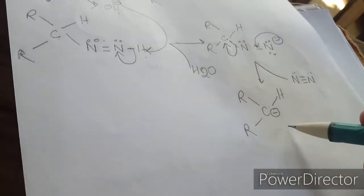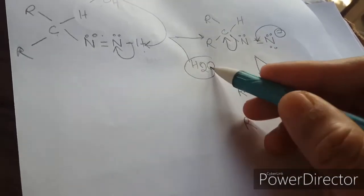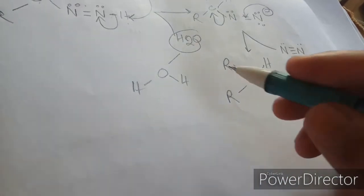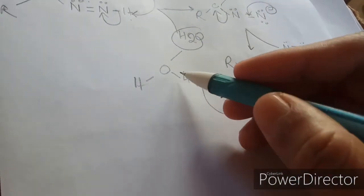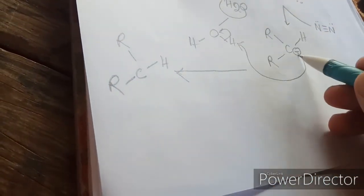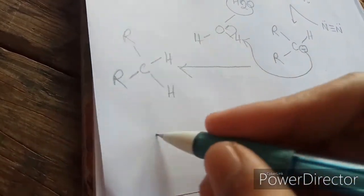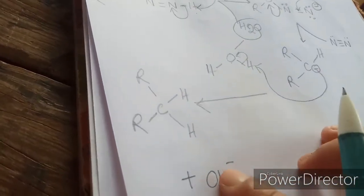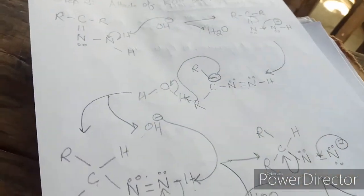This carbanion will attack the hydrogen of the water molecule. So the product will be R-C(R)(H)-H, that is an alkane, plus one OH⁻. This OH is the base that we took earlier. So here we get the final product, which is the alkane.